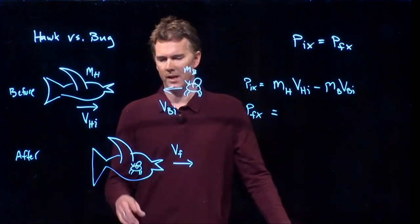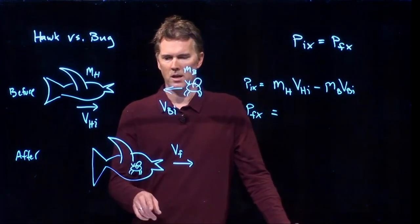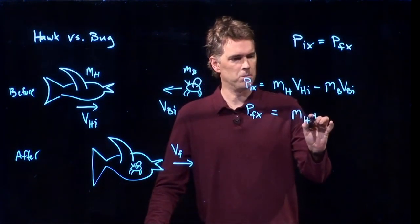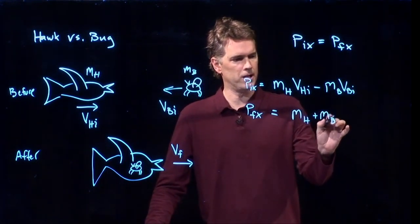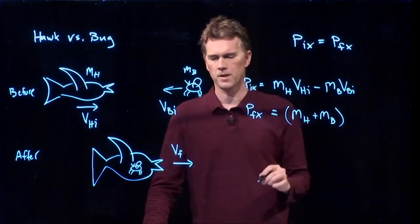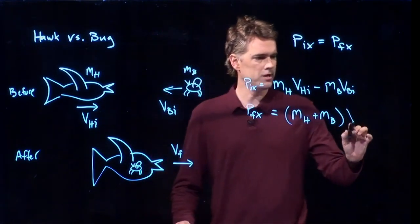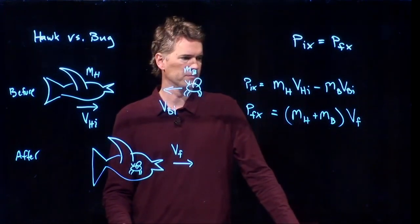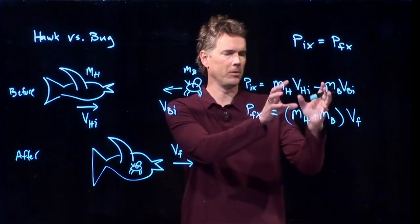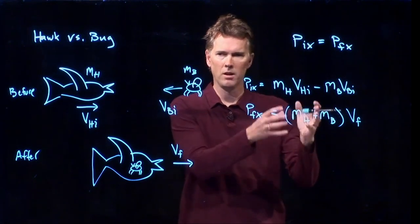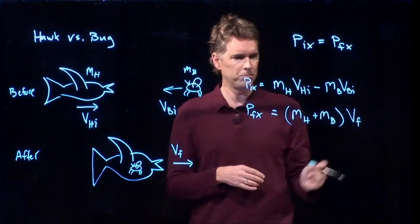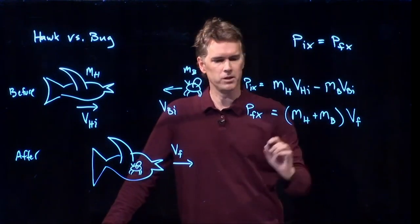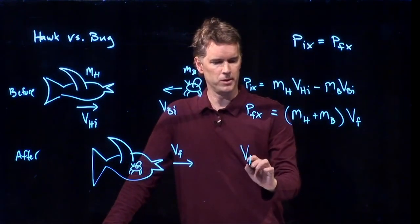P final in the x direction is the mass of the hawk plus whatever is in its belly, the mass of the bug, times v final of the whole system. They're stuck together and so we can combine the two masses because they're both moving at the same speed. And now we can just set them equal to each other and we can solve for Vf. What do we get?